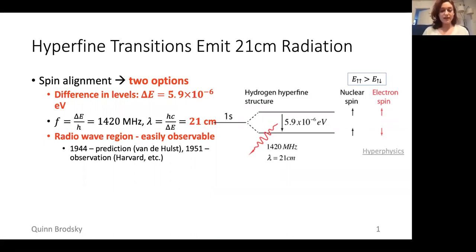This wavelength happens to fall in the radio wave region, which means that you can detect it using radio telescopes. The existence of this radiation was predicted in 1944, and it was discovered in 1951.